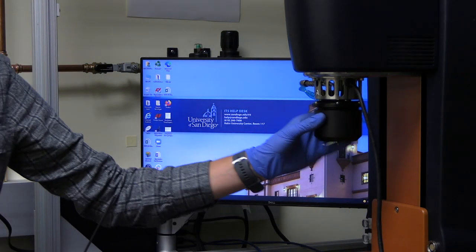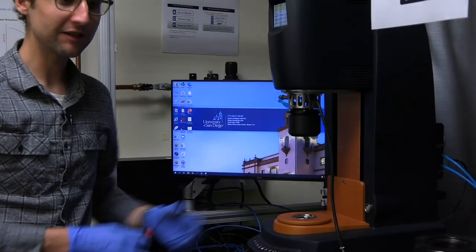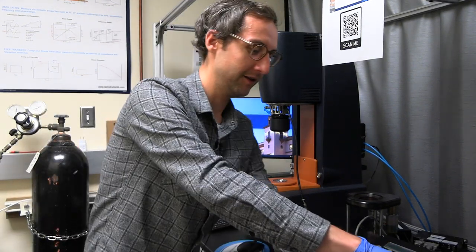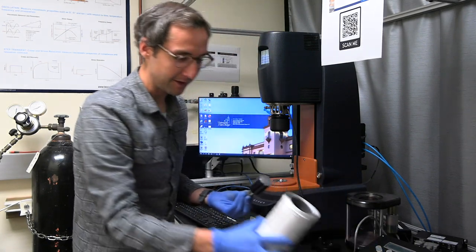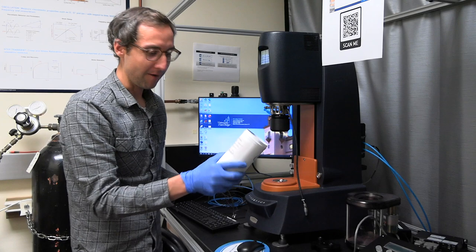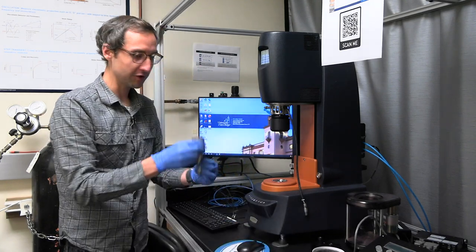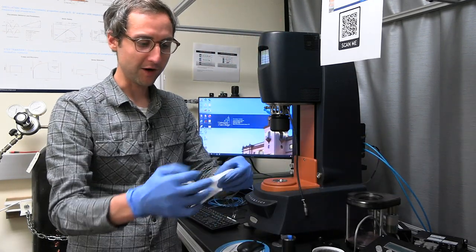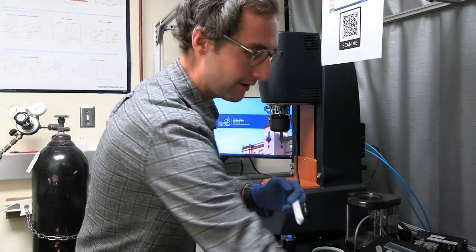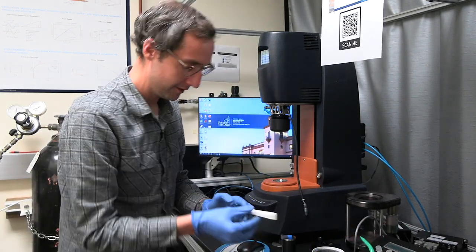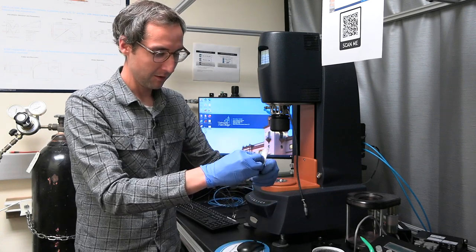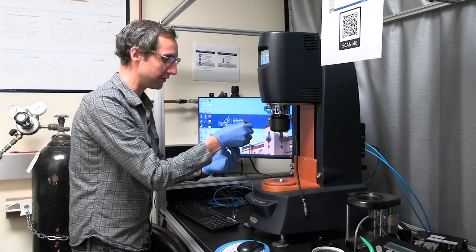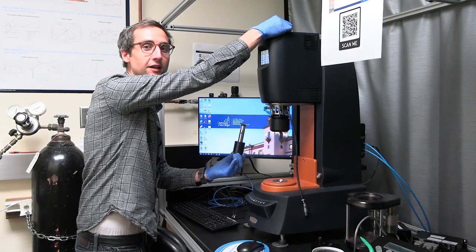Alright, once we have the upper heated plate system, we can put on our geometry. So for this demonstration, we'll put the 40 millimeter upper geometry. Before I put it on, I want to just clean it. So let's take a Kim wipe. Wet it with methanol. And wipe the surface.